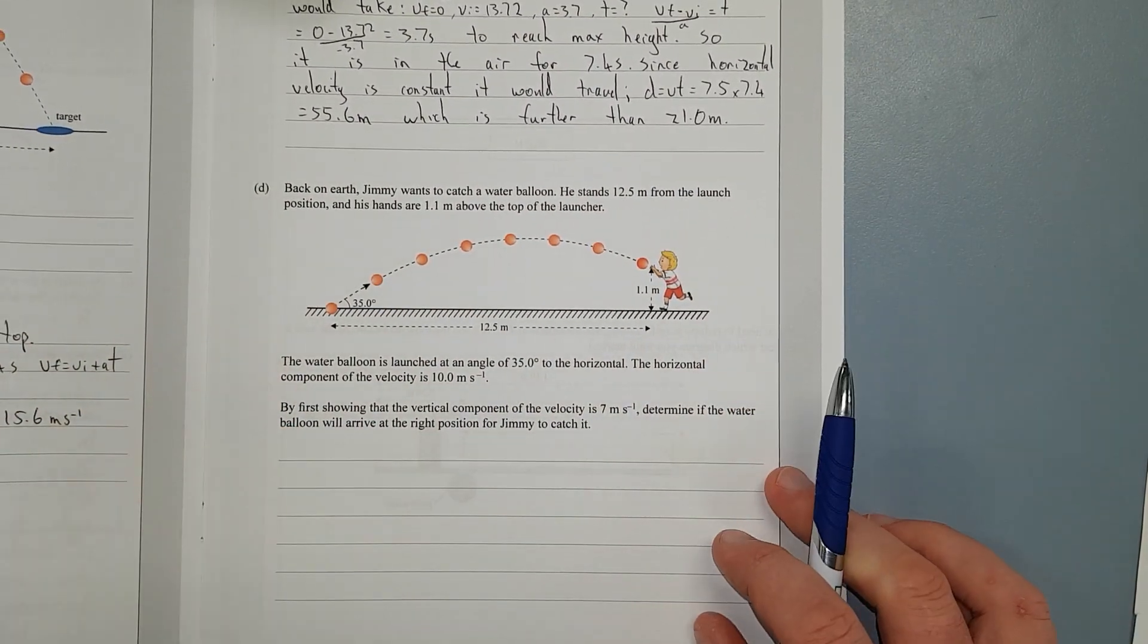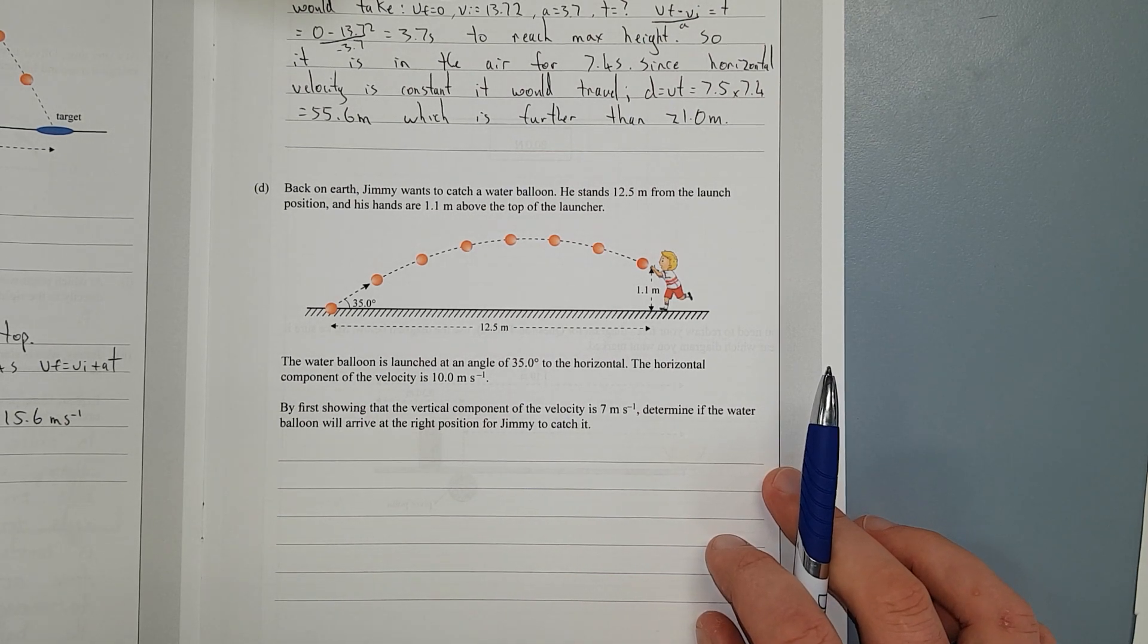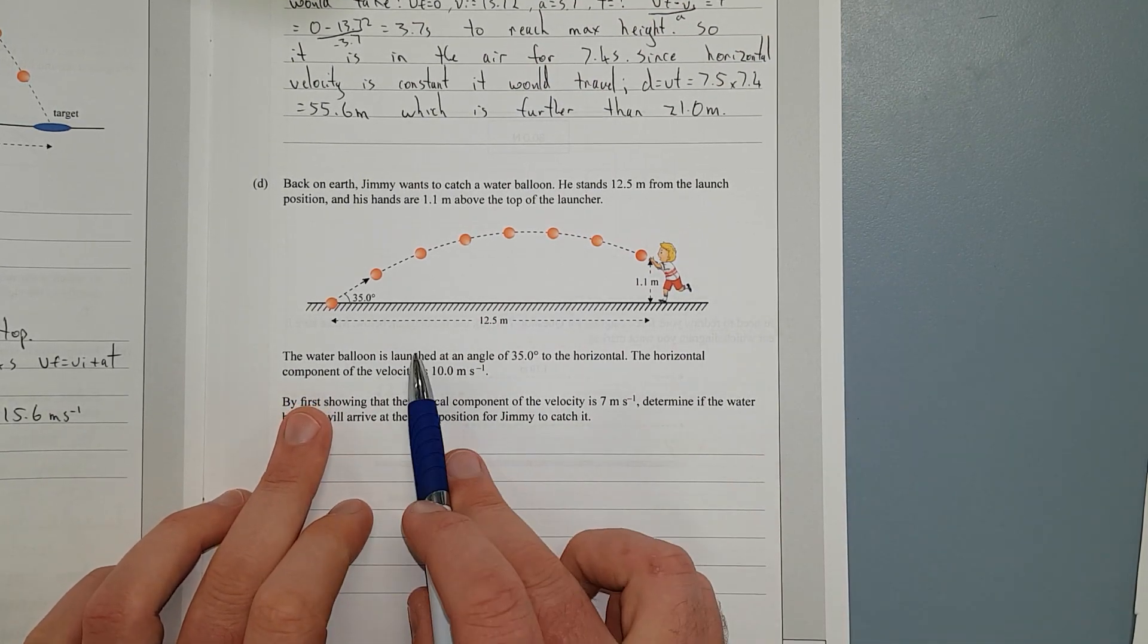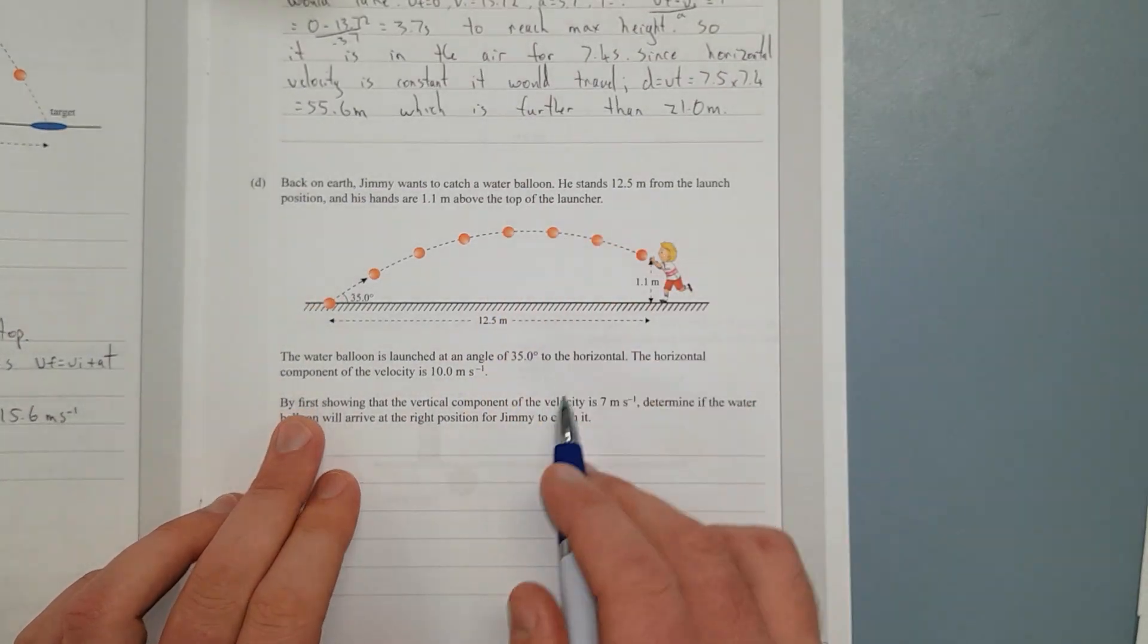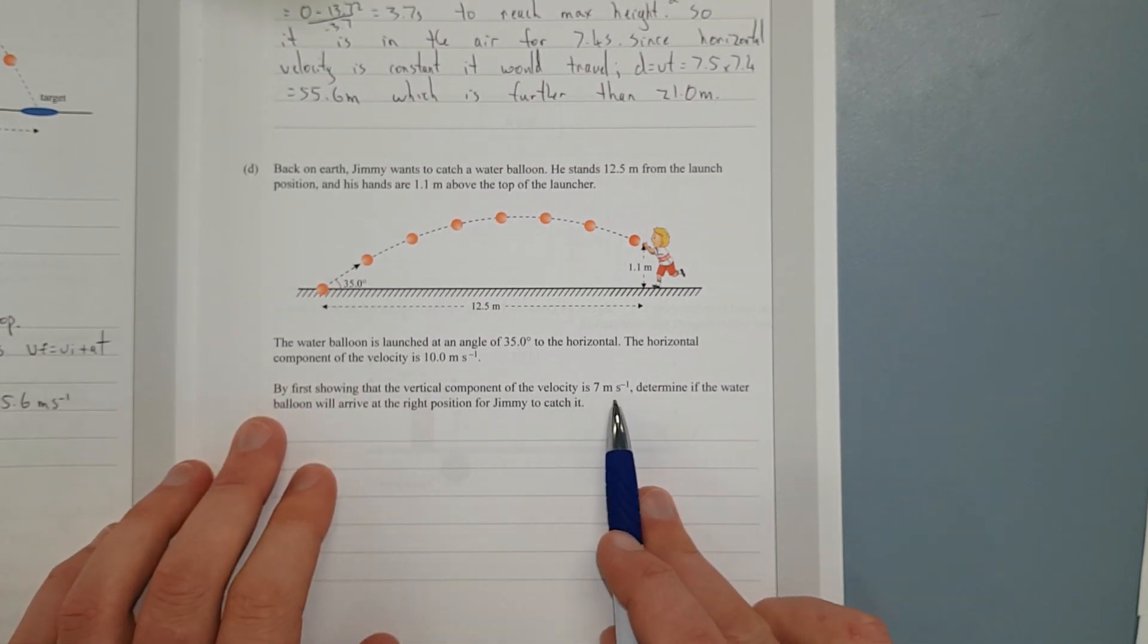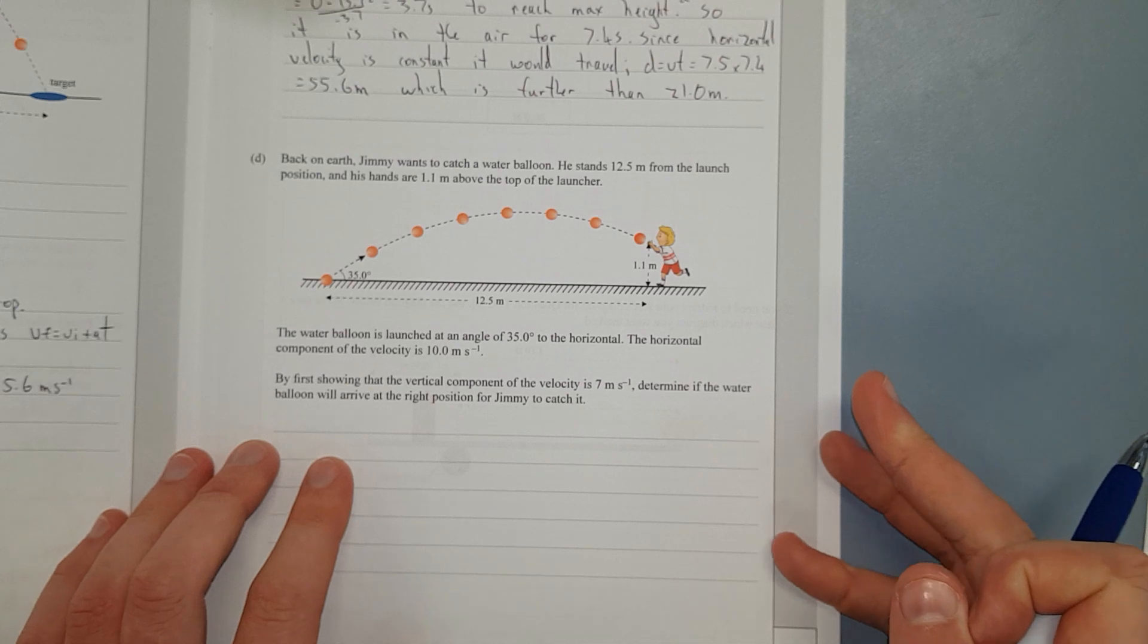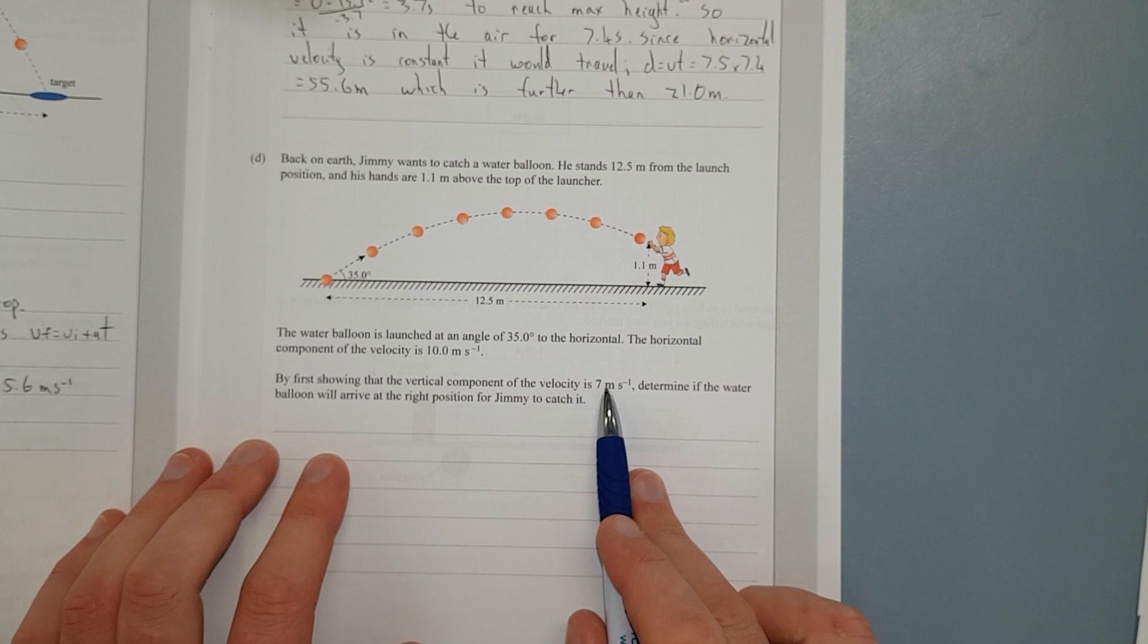Back on Earth, Jiminy wants to catch the water balloon. He stands 12.5 metres from the launch position, and his hands are 1.1 metres above the top of the launcher. The water balloon is 35 degrees to the horizontal. The horizontal component of velocity is 10. By first showing the vertical component of velocity is 7 metres per second, determine if the water balloon will arrive at the right position for Jiminy to catch it. This is a three-step question, because first and foremost, we need to show that the vertical component is that.